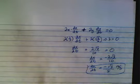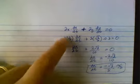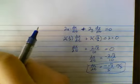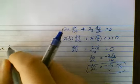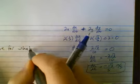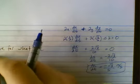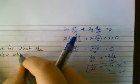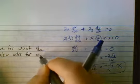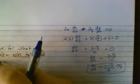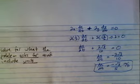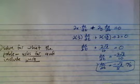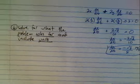Finally, the sixth step: solve for what the problem asks for and include the units. The rate of change of y was in meters per second, so x is also in meters per second. If needed, depending on what the answer choices are, we can put this in the calculator to get the exact decimal.